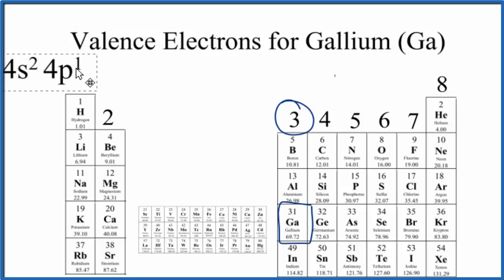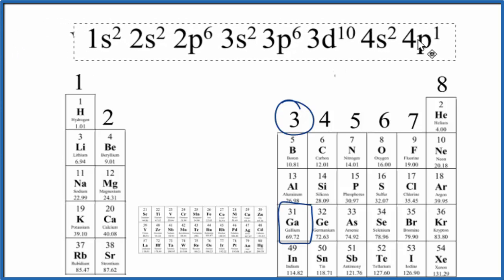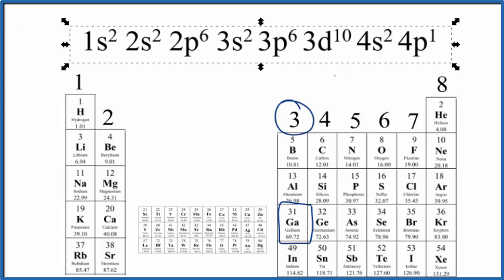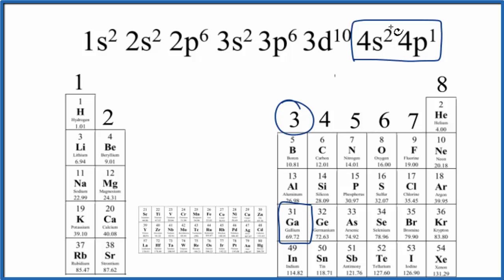We could also look at the electron configuration for gallium to figure out how many valence electrons it has. We look at the highest energy level, that's the fourth energy level here. In the fourth energy level, we have two plus one, so we have three valence electrons according to the electron configuration for gallium. And that's what we found on the periodic table.